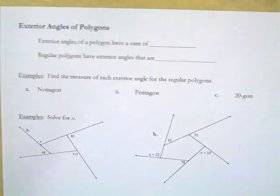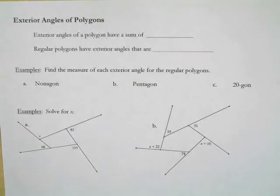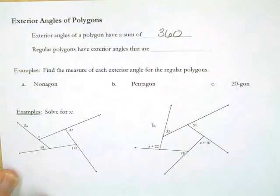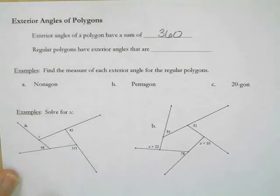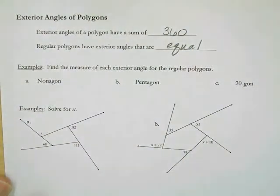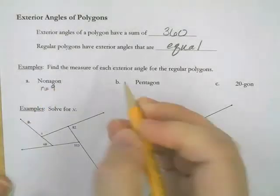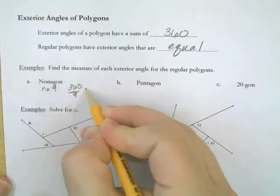Now we're working on exterior angles of a polygon — the angles on the outside. When you walk around the outside of something, you go in a complete circle, and a circle is 360 degrees. So the exterior angles of a polygon always have a sum of 360 degrees. For a regular polygon, if all inside angles are the same, then all outside angles are the same too. For a nonagon with nine sides: 360 divided by 9 equals 40 degrees per exterior angle.